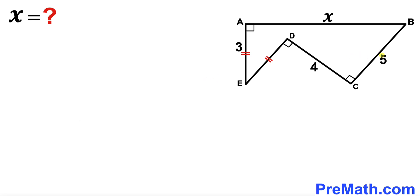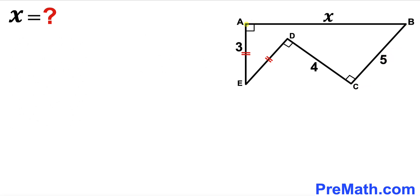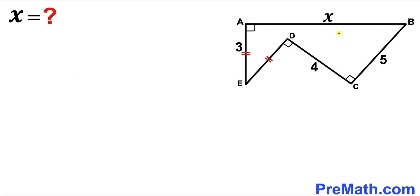Welcome to pre-math. In this video we have got polygon ABCDE, such that its side length AE is 3 units, side length CD is 4 units, side length BC is 5 units, side length AB is x units, AE length equals DE length, and all angles are 90 degrees each. Our task is to find the value of x.